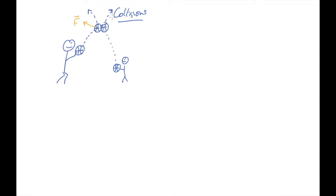The basketball was going this way and suddenly it got turned and went over here. So there was a big force pushing it this way. The other basketball, by Newton's third law, had the same magnitude force in the opposite direction acting on it. My son's basketball put a force on my basketball. Newton's third law says my basketball is going to put a force back on the other one — same magnitude, opposite direction.